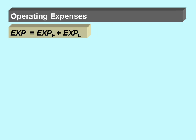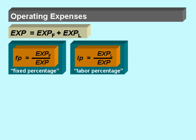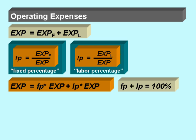We introduce a ratio FP — fixed percentage — as the ratio of fixed operating expenses in relation to the total operating expenses, and also ratio LP — labor percentage — as the ratio of labor related expenses over total expenses. We can then write that total expenses equals FP multiplied by expenses plus LP multiplied by expenses, with FP plus LP equals 100%.